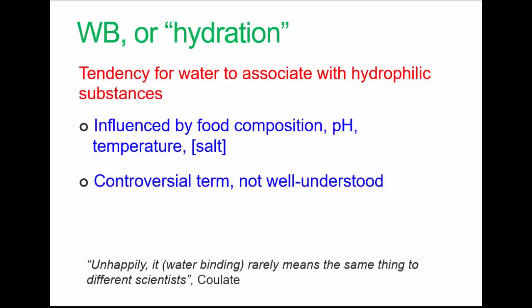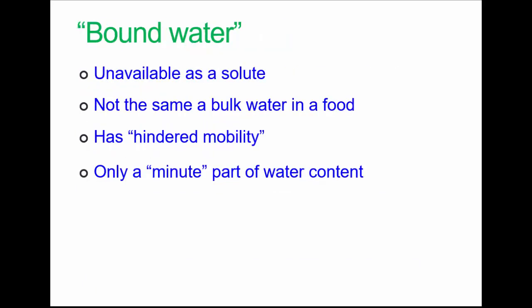Getting on to quantifiable stuff. Food chemists often lack consistency in terminology, unfortunately. Water binding is one example—note here lots of factors influence it as well. Here's a definition: bound water is that which is retained in the structure of the food.